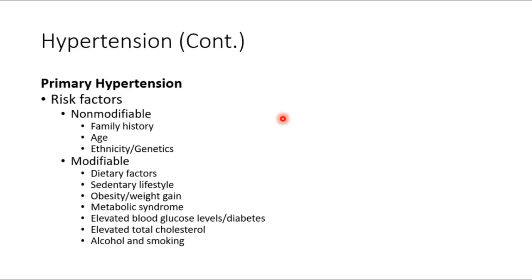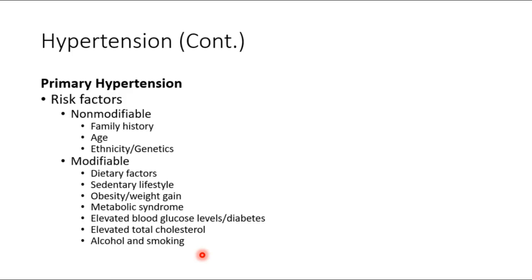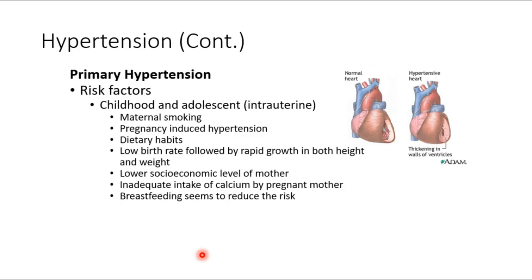Modifiable risk factors include diet and lifestyle. Regarding obesity control: no single study proves a permanent method for weight loss. Metabolic syndrome factors — elevated blood glucose, elevated total cholesterol, being diabetic — can be treated. Alcohol and smoking are hypothetically modifiable, though addiction makes that complex.